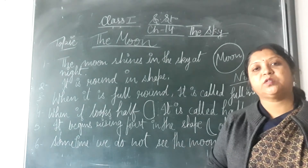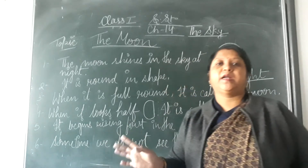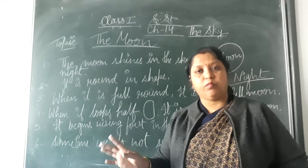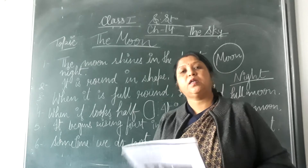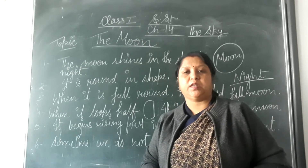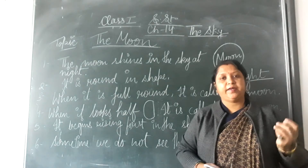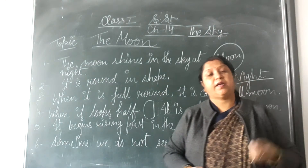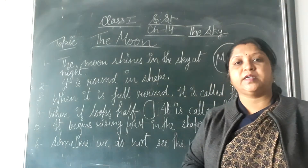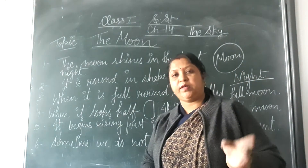In the sky, during daytime we can see the sun. During the day we see the sun. At night we can see stars and moon. The sun is a huge ball. It is also a star. Sun gives us heat and light.